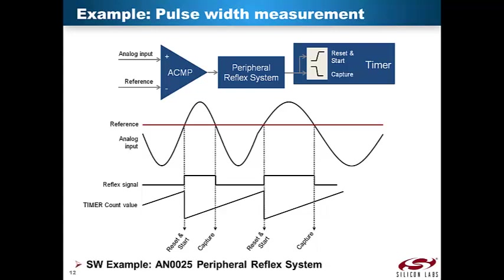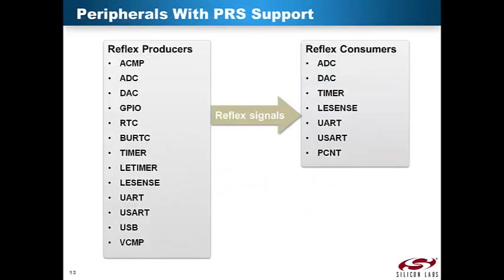An example of how to implement this in software is found in application note 25 on the Peripheral Reflex System. This list presents the wide selection of peripherals that can be used with the Peripheral Reflex System. As you can see from these two quite long lists, PRS gives you lots of options for configuring direct interaction between different peripherals.